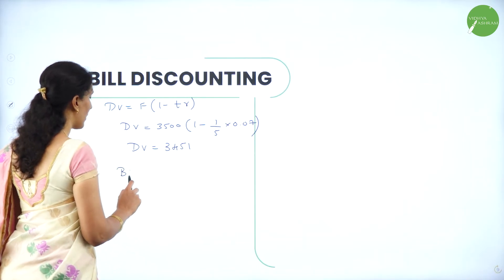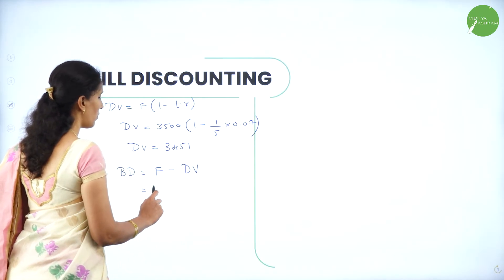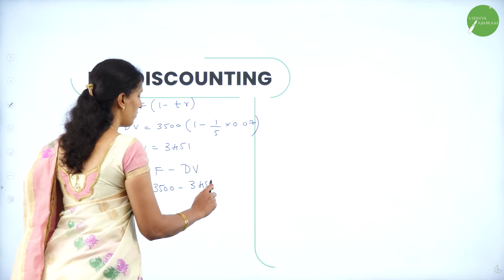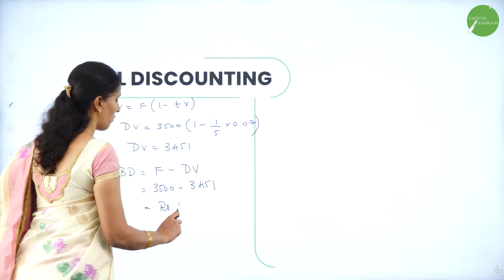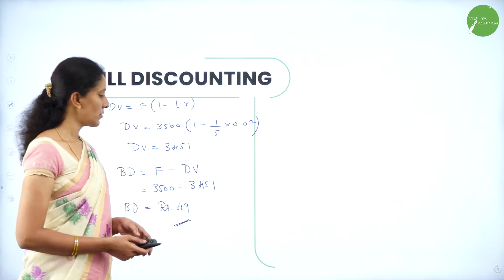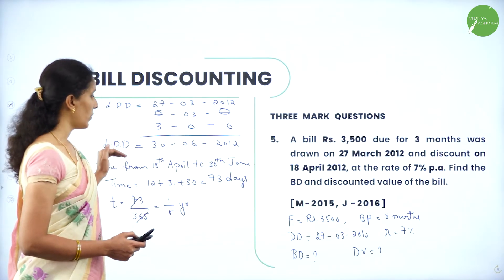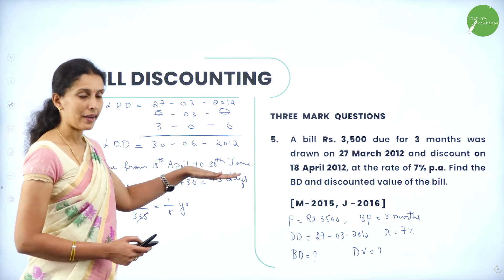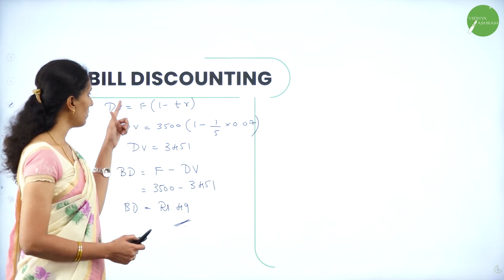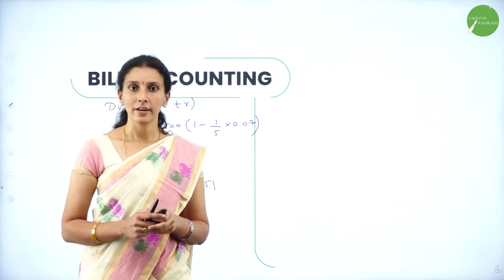Next we need to find banker's discount. Banker's discount equals face value minus discounted value: 3500 minus 3451 equals Rs. 49. So banker's discount is Rs. 49. Since we need to calculate time, we first find the legally due date so the number of days can be calculated, giving time in years — then substitute into the formula to find discounted value and banker's discount.